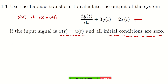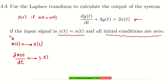One thing we should note: when the signal is x(t) and its Laplace transform is X(s), then we can conclude that the Laplace transform of the derivative d(x(t))/dt equals s times X(s) minus x(0). But here the initial condition is zero, so considering zero initial conditions, the Laplace transform of the derivative of x equals s times the Laplace transform of x(t).